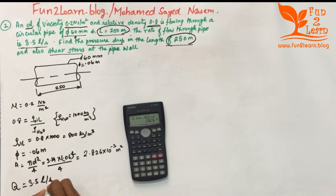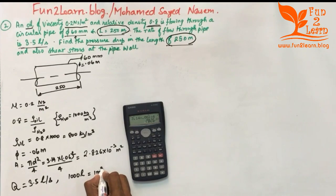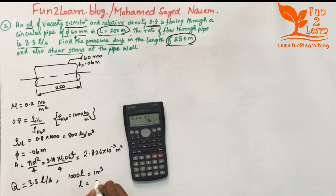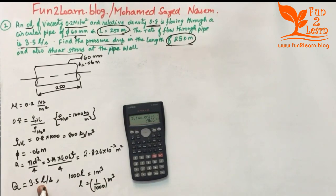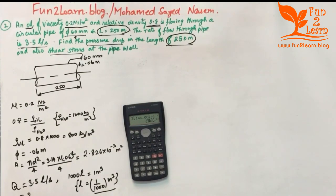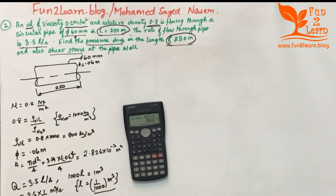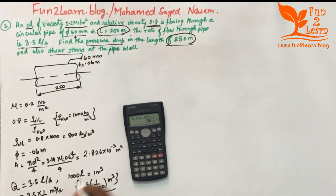The fluid density is 800 kg per meter cube (relative density 0.8 × 1000). For unit conversion, 1 liter = 1/1000 meter cube, so the discharge Q = 3.5 × (1/1000) = 3.5 × 10⁻³ meter cube per second.